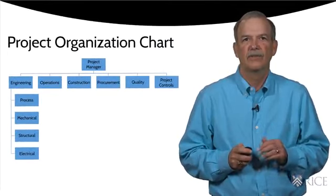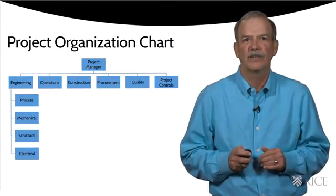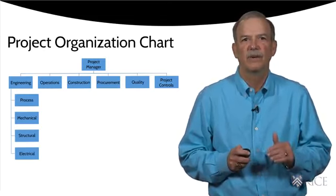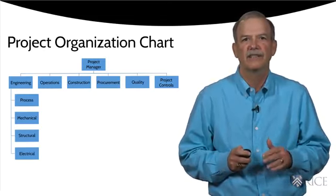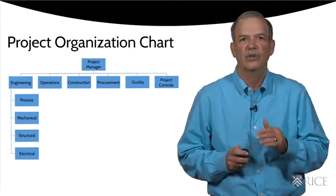Below this main level, the organization chart may be broken into further sections in a similar fashion. For instance, we would expect engineering to be divided into the appropriate disciplines such as process, mechanical, structural, and electrical.